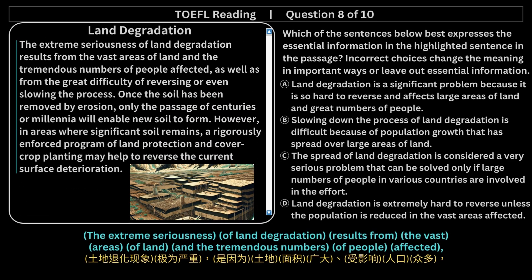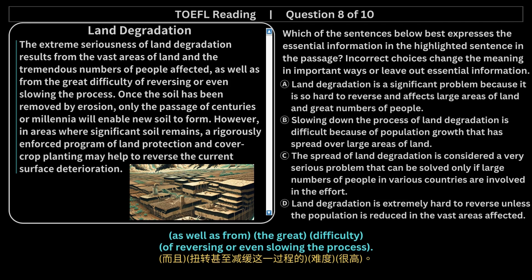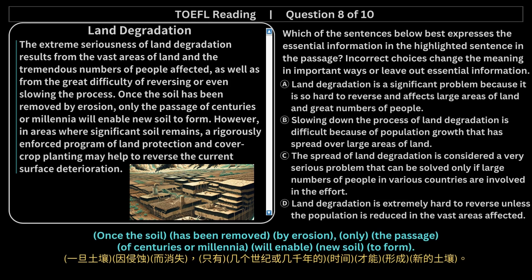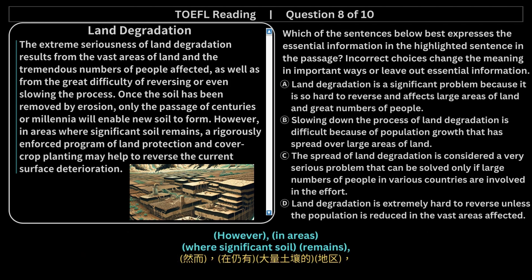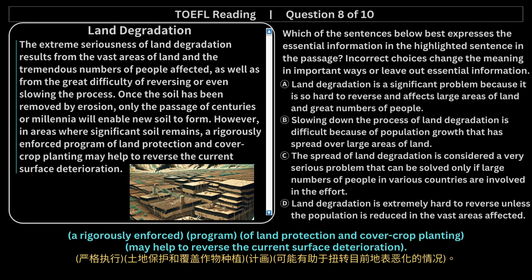The extreme seriousness of land degradation results from the vast areas of land and the tremendous numbers of people affected, as well as from the great difficulty of reversing or even slowing the process. Once the soil has been removed by erosion, only the passage of centuries or millennia will enable new soil to form. However, in areas where significant soil remains, a rigorously enforced program of land protection and cover crop planting may help to reverse the current surface deterioration.